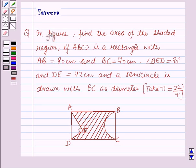Hello and welcome to the session. In this session I will discuss a question which says: in the figure, find the area of the shaded region if ABCD is a rectangle with AB equal to 80 cm and BC equal to 70 cm, angle AED equal to 90 degrees, DE equal to 42 cm, and a semicircle is drawn with BC as diameter. Take pi equal to 22 by 7.